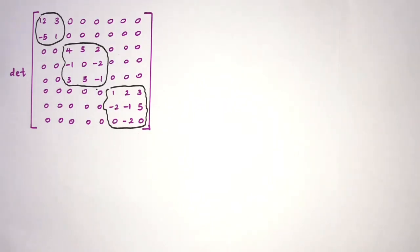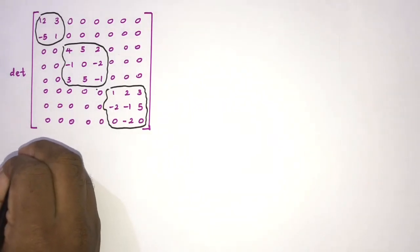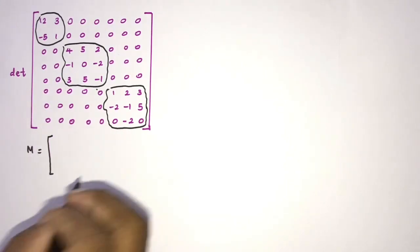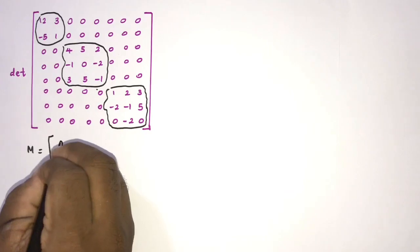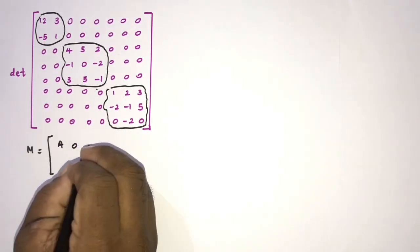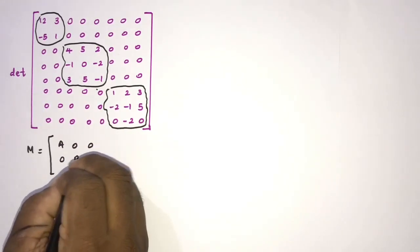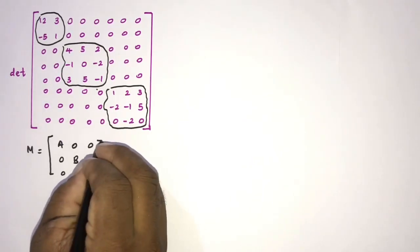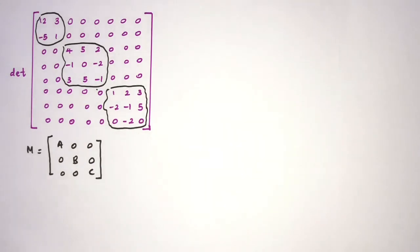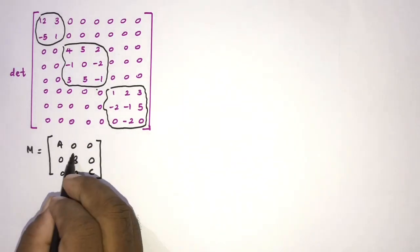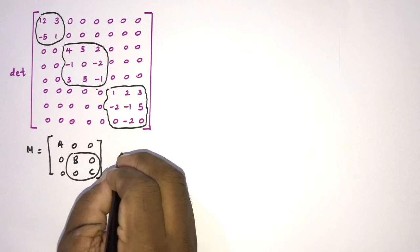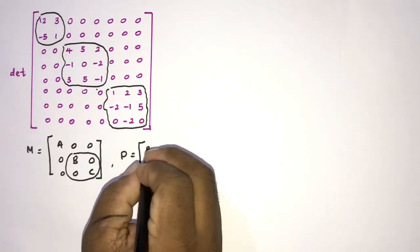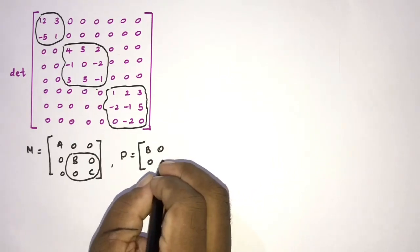So we can represent this matrix in block form. If we take M equal to the form of a block matrix, here A, 0, 0, 0, here B, 0, 0, 0, C. Then I am going to take this part P equal to matrix B, 0, 0, C.